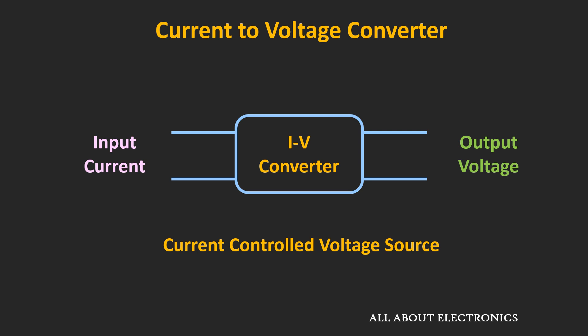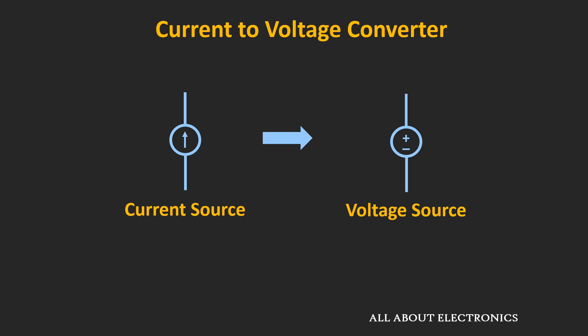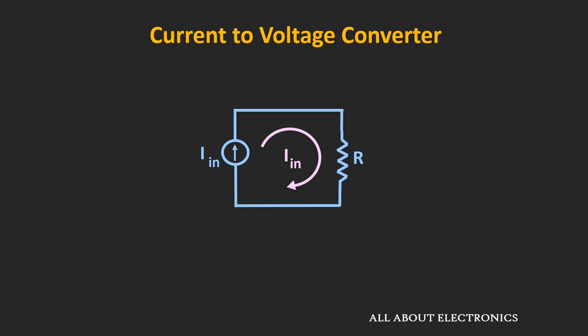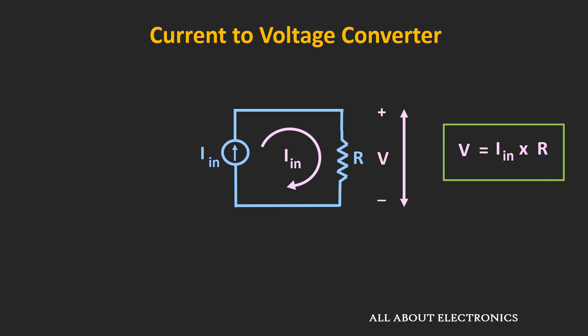Let us understand how we can design this current-to-voltage converter. Before we see the op-amp-based converter, first let us see how we can design it using passive circuit components. Just by connecting a resistor across a current source, we can convert current into voltage. The voltage developed across this resistor is given by the simple expression V = I × R.